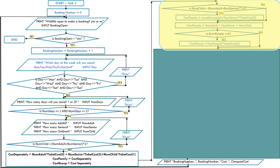We check if a family ticket is allowed: is the number of children greater than 1.5 times the number of adults and seniors? If yes, we calculate cost family as the rounding of number of older people × ticket cost[3] ($60). Then we calculate num people equals num adult + num senior + num child. If num people is greater than or equal to 6, they're allowed a group ticket: cost group equals number of people × ticket cost[4] ($15 per person).